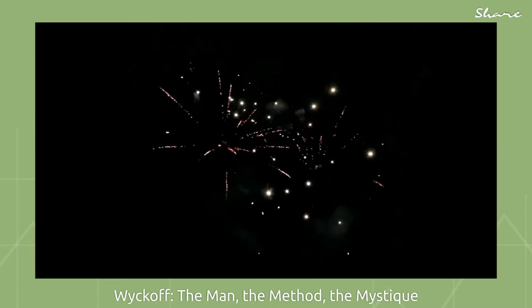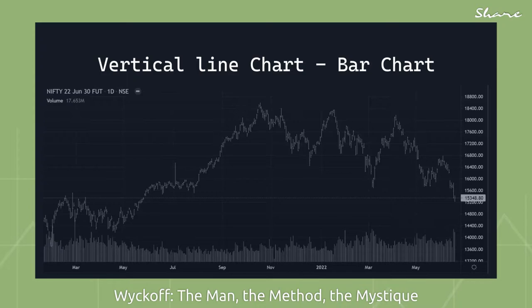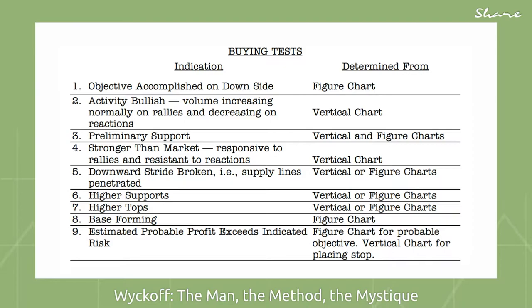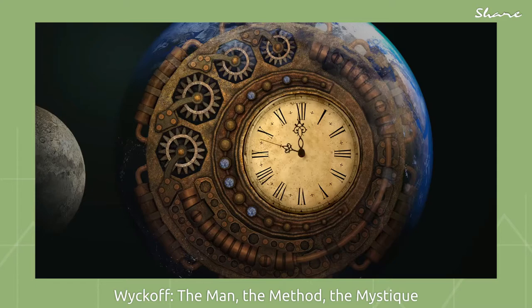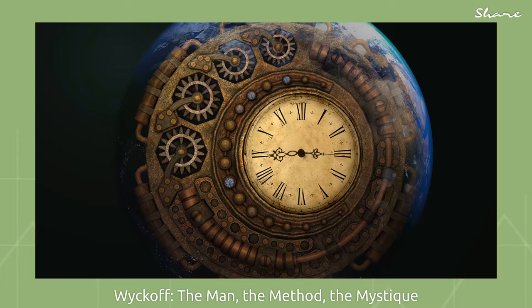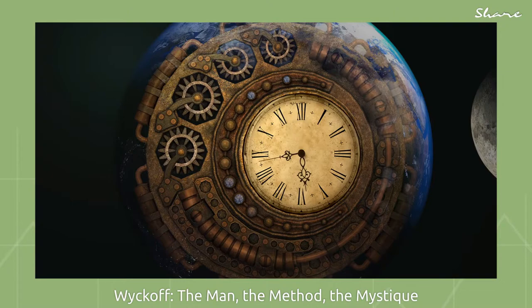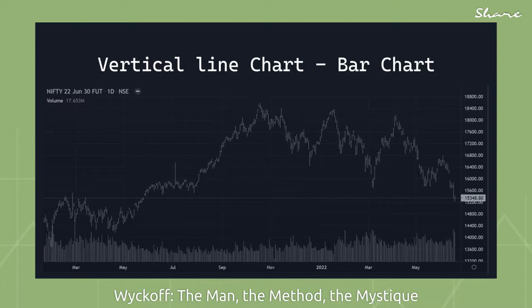Step 4: Determine the stock's readiness to move. Rank stocks in order of your preference. Use bar charts and figure charts of individual stocks. Apply the nine-point test of buying and selling outlined in chapters 6 and 7. Step 5: Time your commitment with a turn in the stock market index. Put your stop-loss in place and relax, then follow through until you close out the market position. Use bar charts.